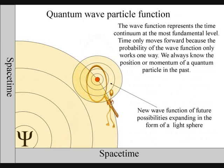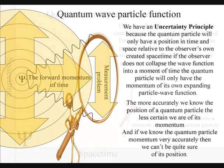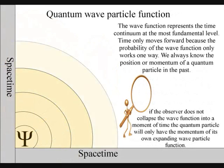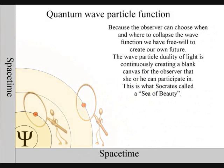This radiant energy creates the probability of the uncertainty principle in quantum physics. This is because the observer can collapse the wave function when and where he likes into moments of time that will be part of its own created space-time.